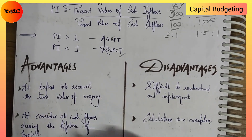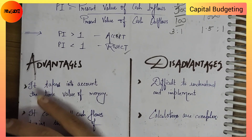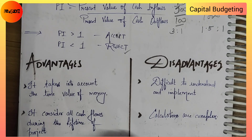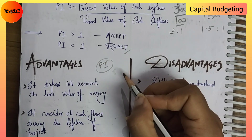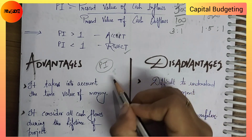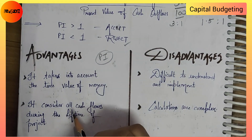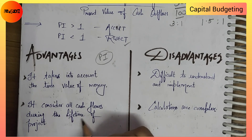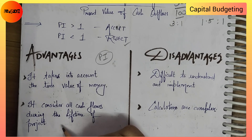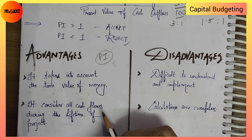Now let's talk about some advantages and disadvantages. The first advantage is that the PI method takes into account the time value of money. The second advantage is that it considers all cash flows during the lifetime of the project.